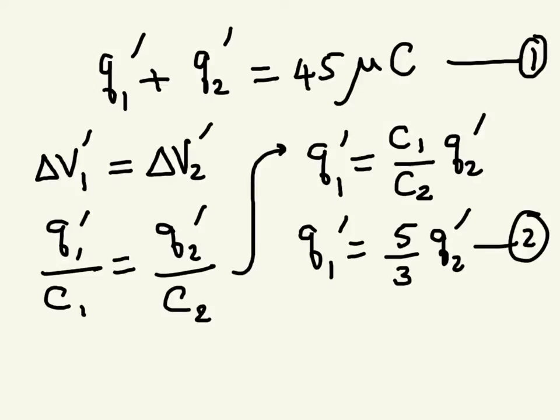So writing down these two equations, one that says that the total charge is 45 microcoulombs which was on C1 to begin with, and the fact that delta V1 prime is equal to delta V2 prime, and I can write the potential differences as charge over the capacitance for C1 and charge over capacitance for C2. And simplifying this, I can express Q1 prime in terms of Q2 prime. So I have two equations and two unknowns. Substitute for Q1 prime from here into here, then you can solve for Q2 prime and then come back and get Q1 prime.